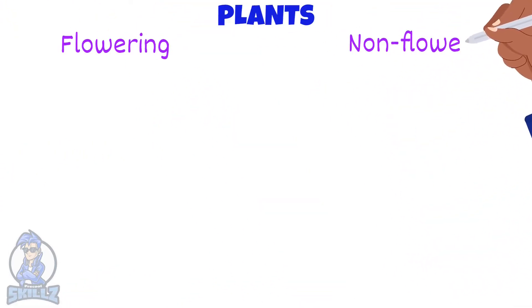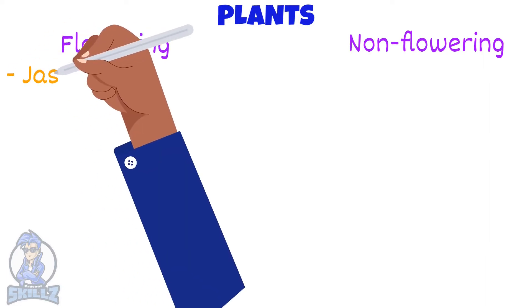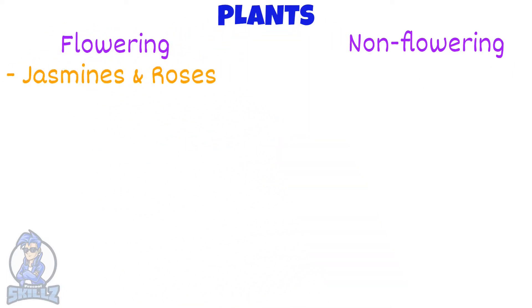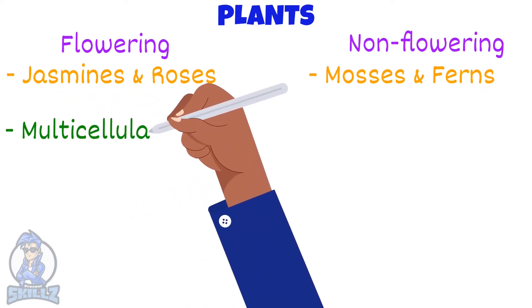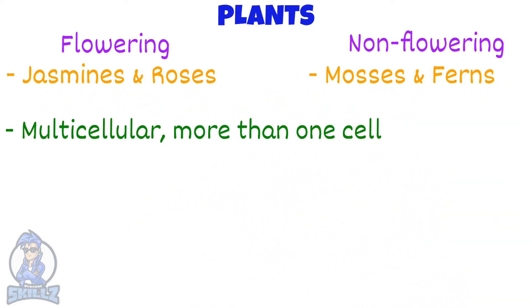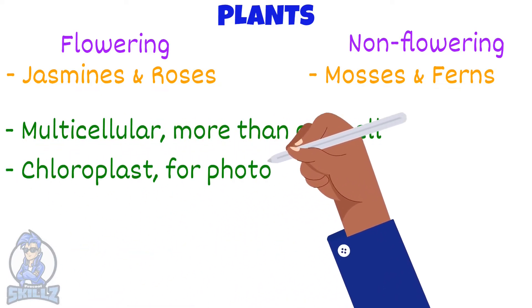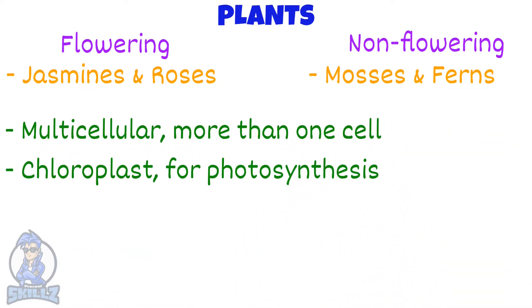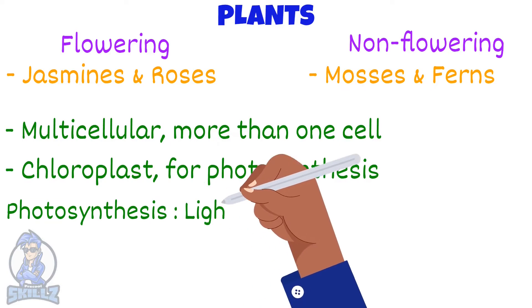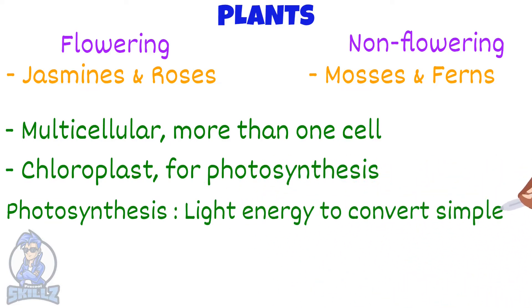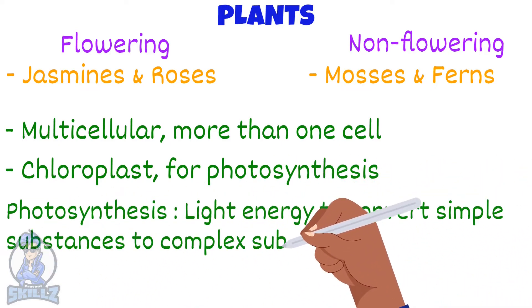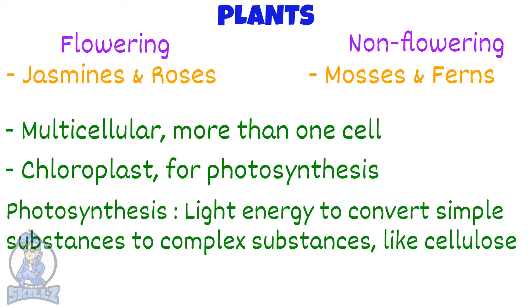Plants are divided into 2 types: flowering and non-flowering plants. Some examples of flowering plants are jasmines and roses, while non-flowering include mosses and ferns. All plants are multicellular, meaning that they are made of many cells. Many of their cells contain chloroplasts, which help them photosynthesize.